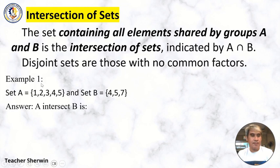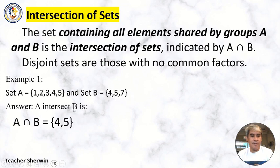Let's have an example. Set A = {1, 2, 3, 4, 5} and Set B = {4, 5, 7}. So what is the intersection of Set A and Set B? A intersect B = {4, 5}. As you can see, in Set A we have 4 and 5, and in Set B we have 4 and 5. So that is the intersection of sets.